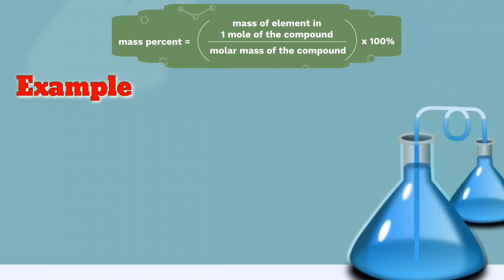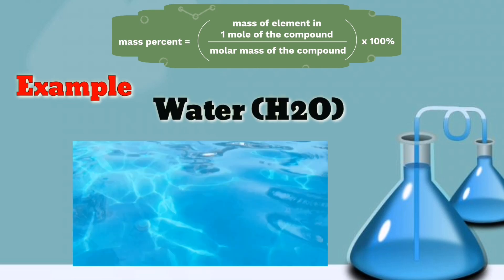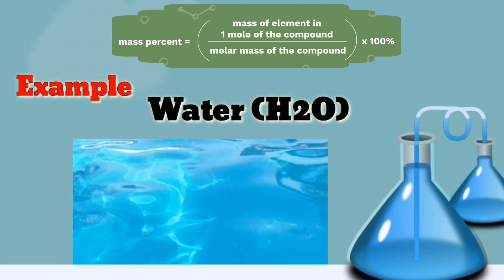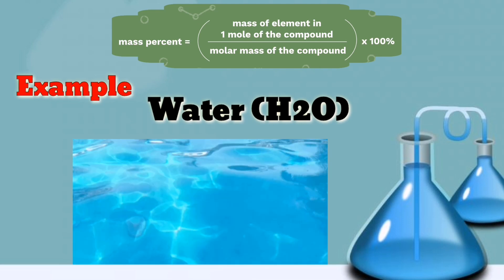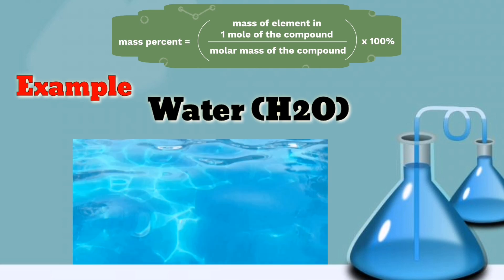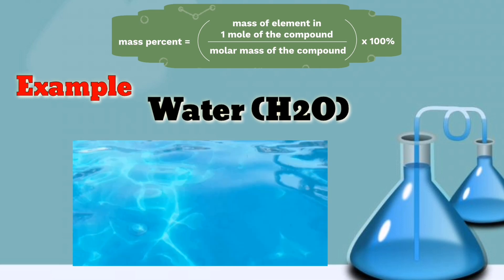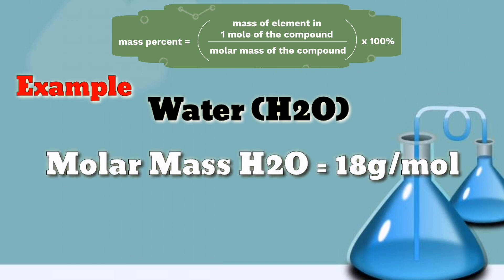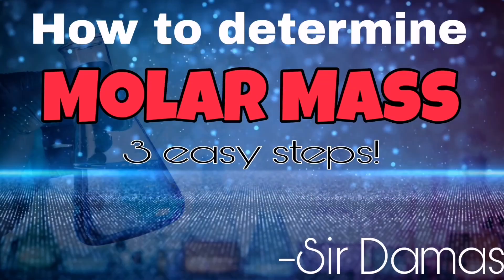So let's have our first sample problem. Determine the percentage composition of each element in the compound water, or H₂O. Before getting into the formula, make sure first to know the molar mass of water, and that is 18 grams per mole. Kindly visit this video to learn how to determine the molar mass of a certain compound.